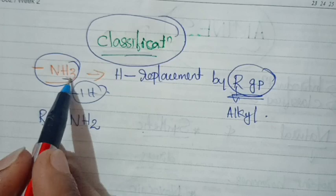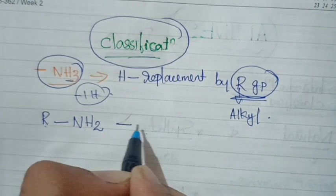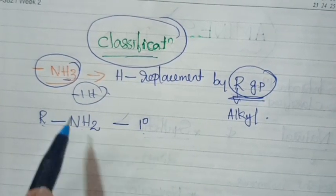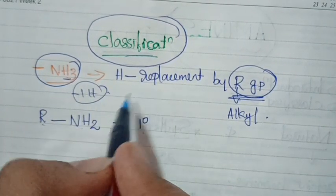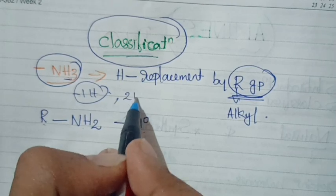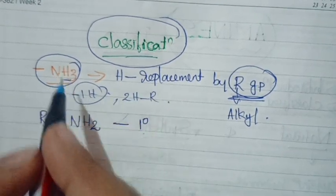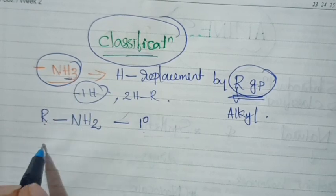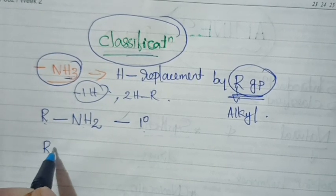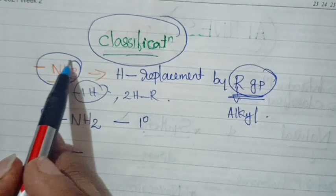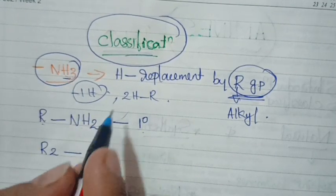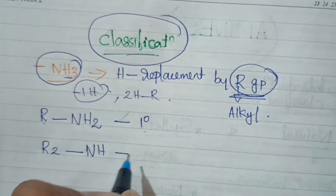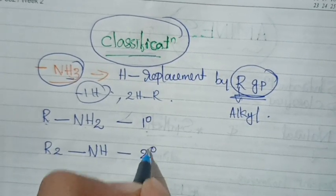R-NH2 is generally represented as primary amines. One hydrogen of ammonia is replaced with an R group — that gives primary amines. If two hydrogens are replaced with two R groups, we write R2NH. So R2NH is the secondary amine.